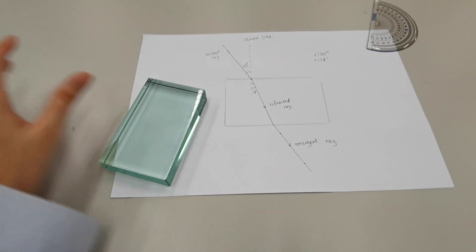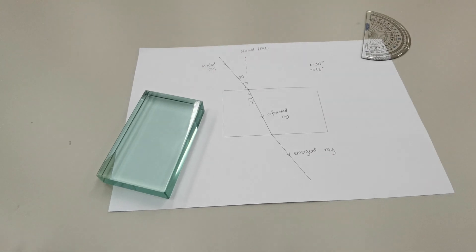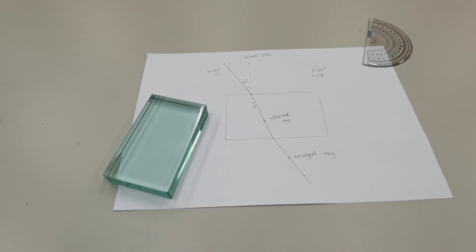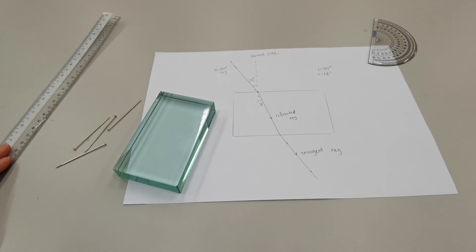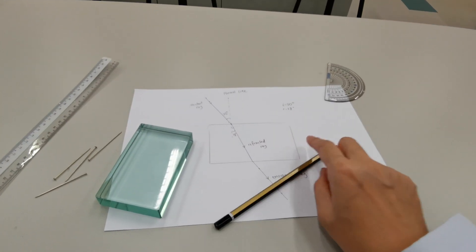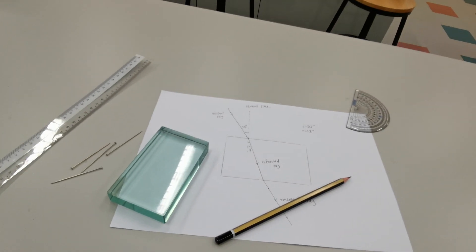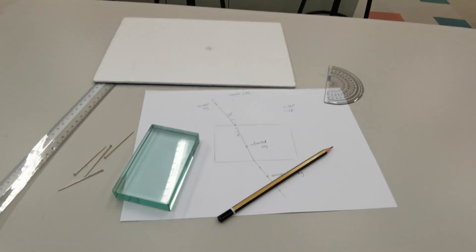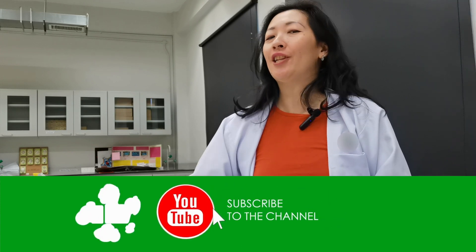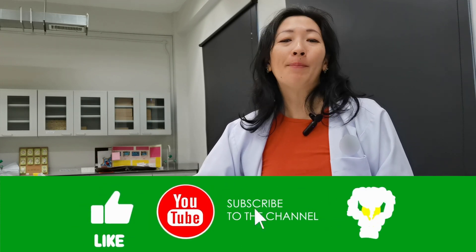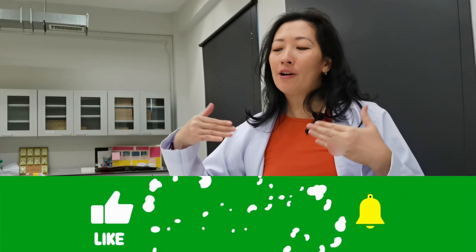This is how you conduct the lab practical for light refraction using a rectangular glass block and four optical pins. I hope you found this video educational and helpful. Don't forget to click like and subscribe with notifications on so that you can get more updates on videos from Ms. Ho about how to conduct experiments in the physics lab. Thanks for watching.